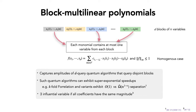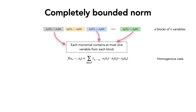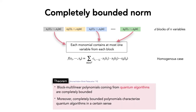Since we care about block multilinear polynomials coming from quantum algorithms, we can restrict this class further. This relies on a nice characterization by Aranachan-Brillette and Palaszewski, who showed that block multilinear polynomials coming from quantum algorithms are not just bounded on the hypercube, but are also completely bounded. They also showed a characterization in the other direction, completely characterizing quantum algorithms via such polynomials. We will use the first part: any quantum algorithm gives a block multilinear polynomial that is completely bounded.